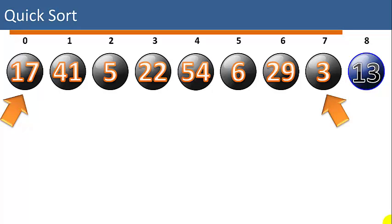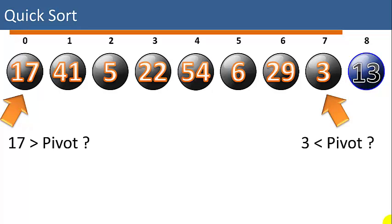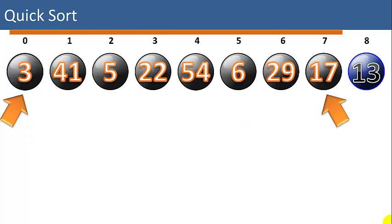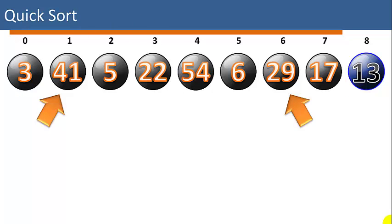We're going to use pointers from the left end and the right end of the list. Our first comparison will be 17 to 13. Is 17 larger than the pivot? Yes it is. Now we're going to jump over to the 3. Is 3 less than the pivot? Yes it is. So since 17 is larger than the pivot and 3 is less than the pivot, we know that we can swap the 3 with the 17.